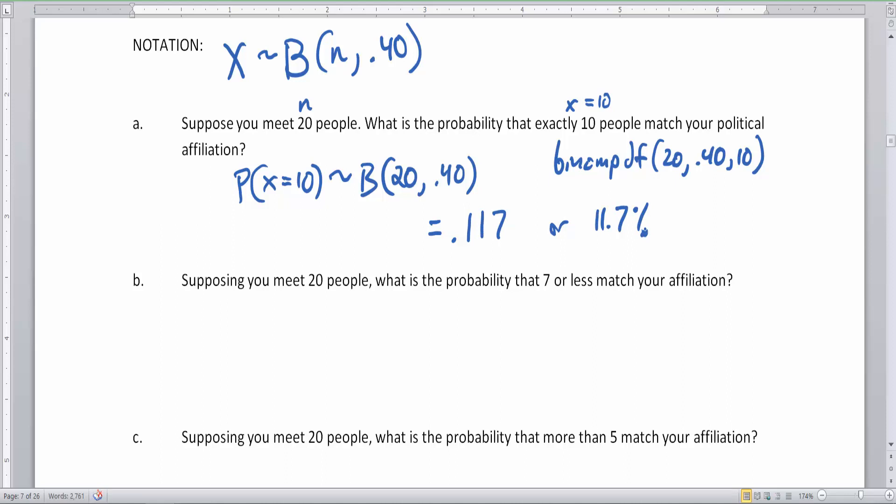This is going to be equal to 0.117 or 11.7% chance of that happening. Now that's exactly 10. So you might think to yourself, oh, that's not very good. But a lot of times we're not looking for the exact amount.